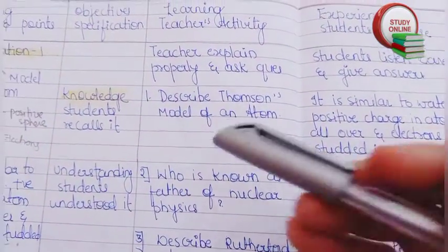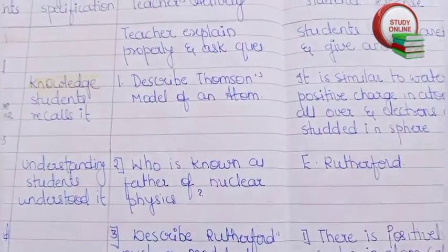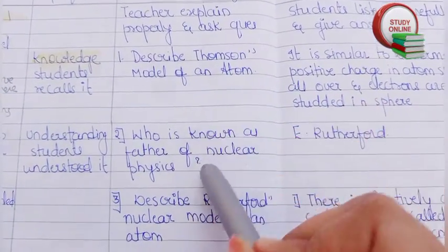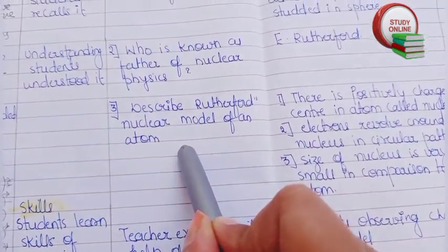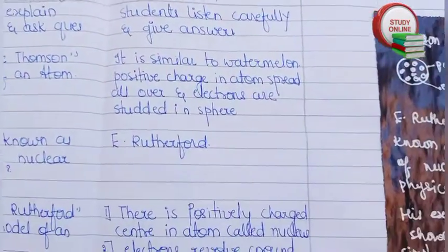After that, here we have to ask questions: Describe Thompson's model of an atom. Who is known as father of nuclear physics? Describe Rutherford's nuclear model of an atom. Here are the answers.